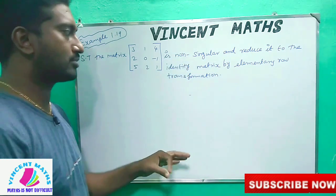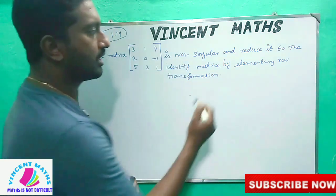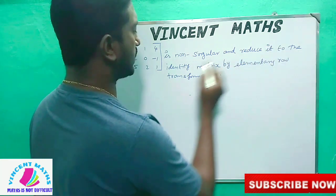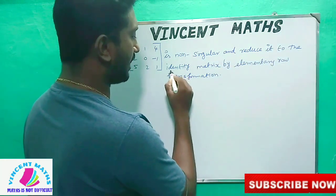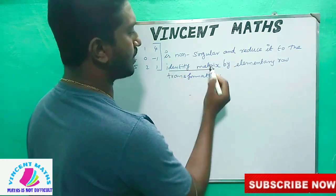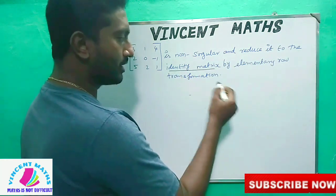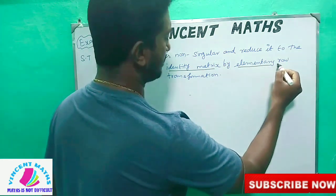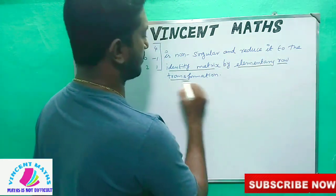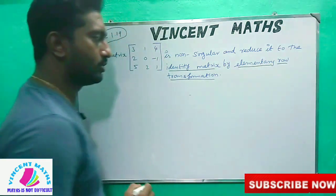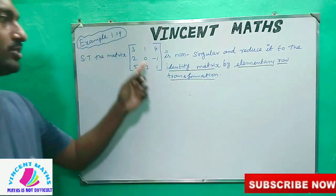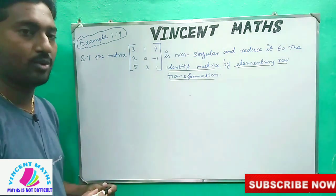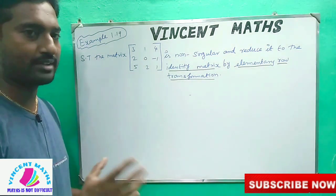Now, what do you say? Reduce it into identity matrix. If you use identity matrix, you can use Elementary Row Transformation. If you use this, you can use identity matrix. If you know identity matrix, you can use unit matrix.